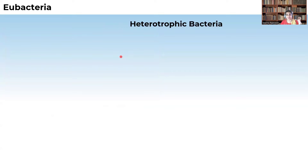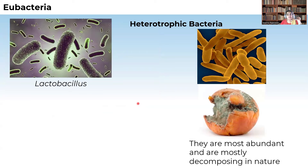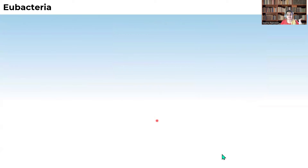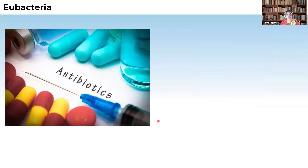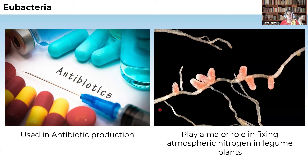Coming to heterotrophic bacteria — most bacteria in the environment are heterotrophic. These organisms are mainly present in decomposing structures. Another example of heterotrophic bacteria is Lactobacillus, which is helpful in the conversion of milk into curd. So Lactobacillus, which helps form curd, is also a heterotrophic bacterium. Some bacteria are also useful in the production of antibiotics, and some help in nitrogen fixation in legume plants.